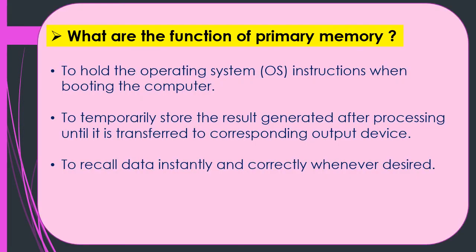The first type of memory is primary memory. Primary memory holds the operating system instructions when booting the computer. It temporarily stores the results generated after processing until they are transferred to a corresponding output device. Recalling data instantly and correctly whenever desired is also done by primary memory.